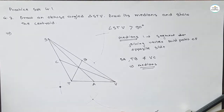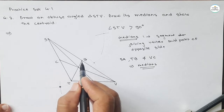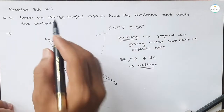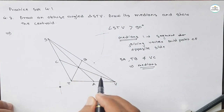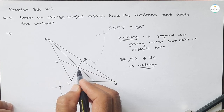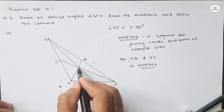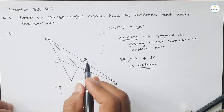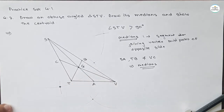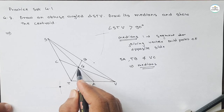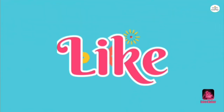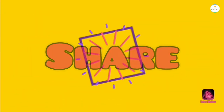It's very simple to draw a median: just find the midpoint of a side and join it to the opposite vertex. Now, the next part asks to show the centroid. When all three medians are drawn, they all meet at a single point. That point is called the centroid, and it is denoted by G. This concurrent point is called the centroid of the triangle. That's all for this video — we will meet again in our next video. Do learn, do enjoy. Thank you.